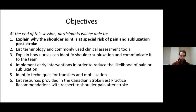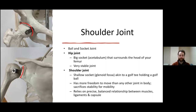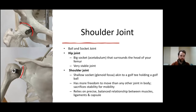Objective one: explain why the shoulder is at special risk of pain and subluxation post-stroke. A good way to understand the shoulder is to contrast it to the hip joint. Both are ball-and-socket joints allowing movements through pretty much all planes. Your hip is a weight-bearing structure built solid with a deep socket that surrounds the head. Your shoulder, on the other hand, sacrifices stability to enable more mobility and flexibility. Looking at these images from our clinic skeleton, you can see the hip has a nice big acetabulum surrounding the bone, while the shoulder joint is quite unstable by its very bony structure.